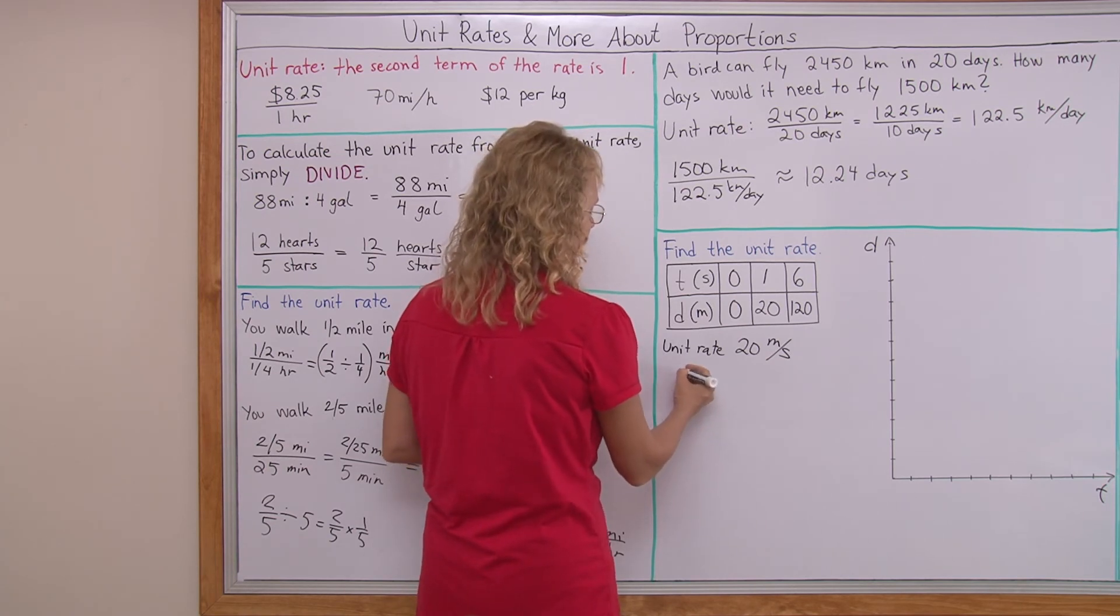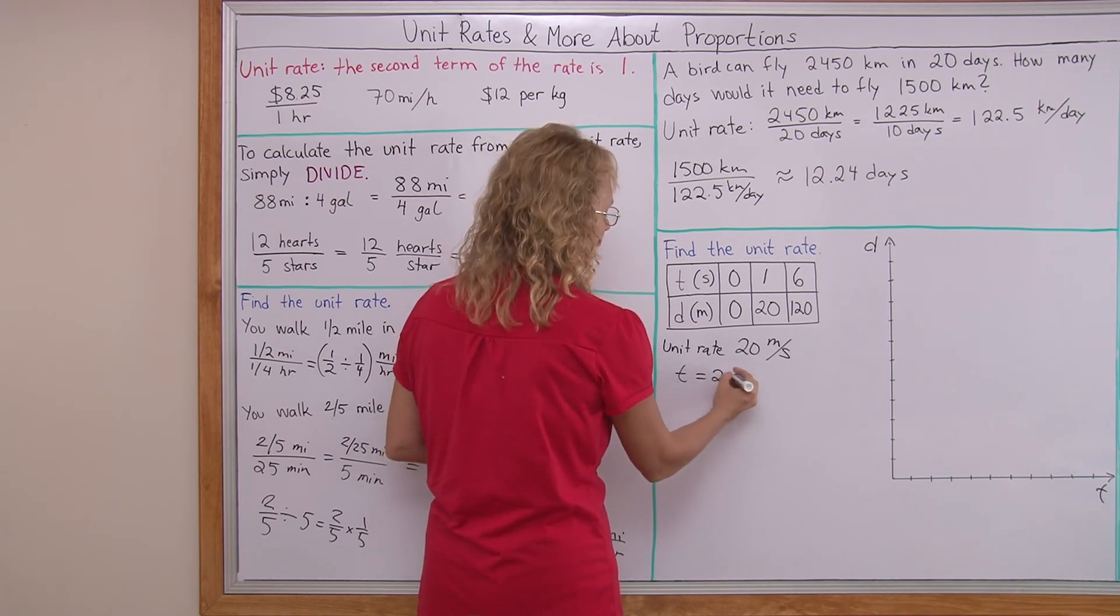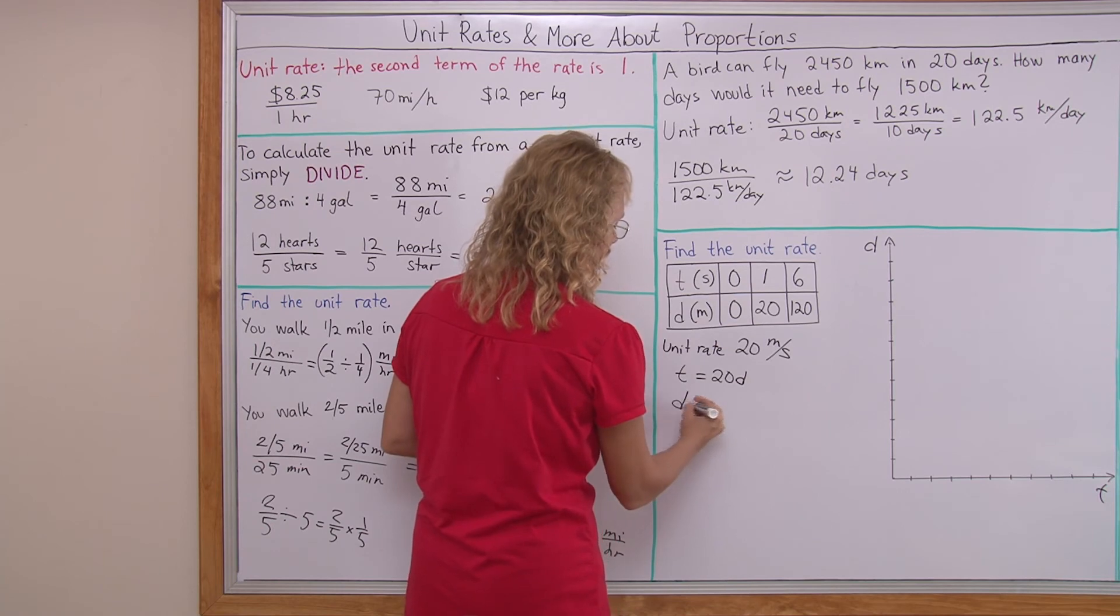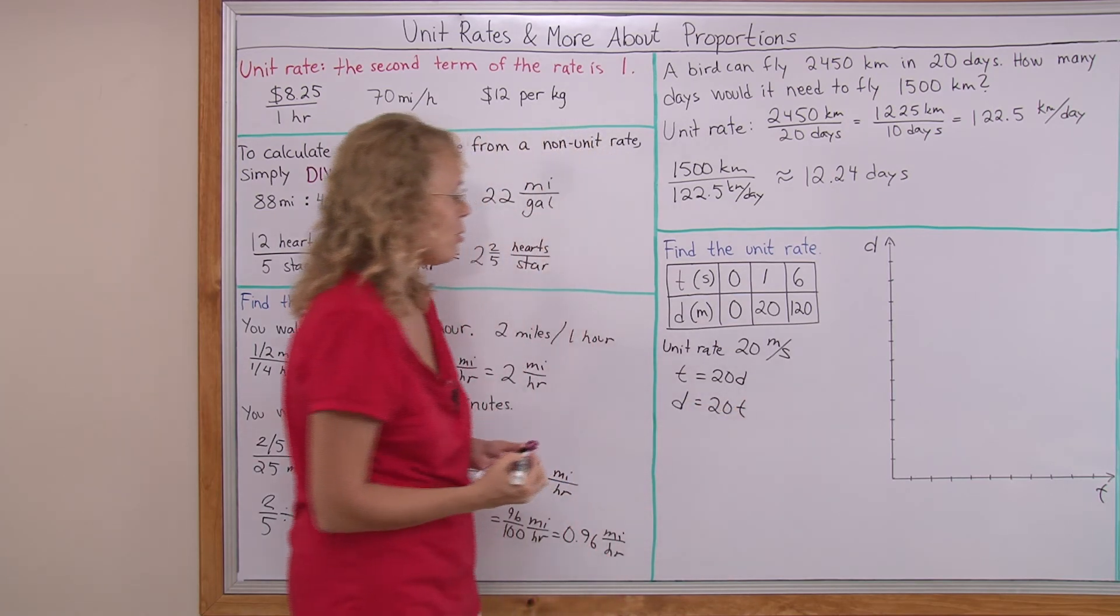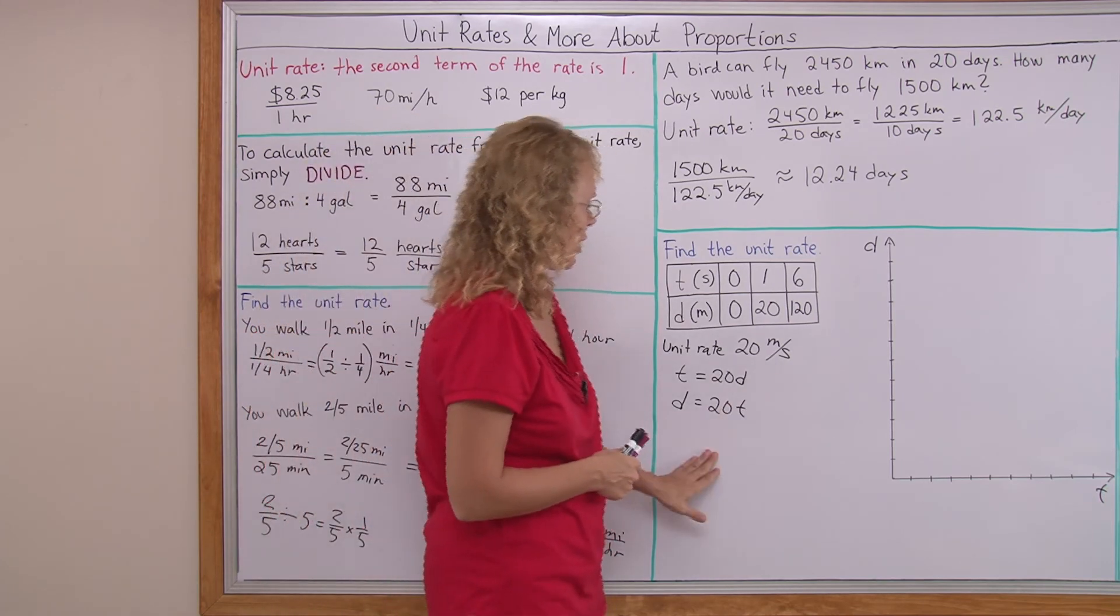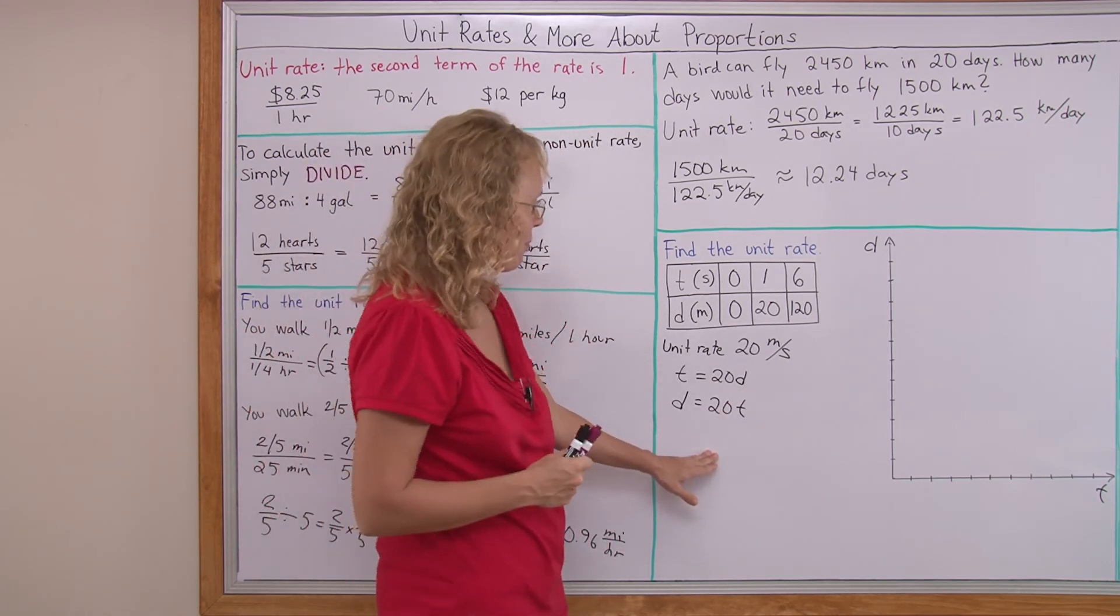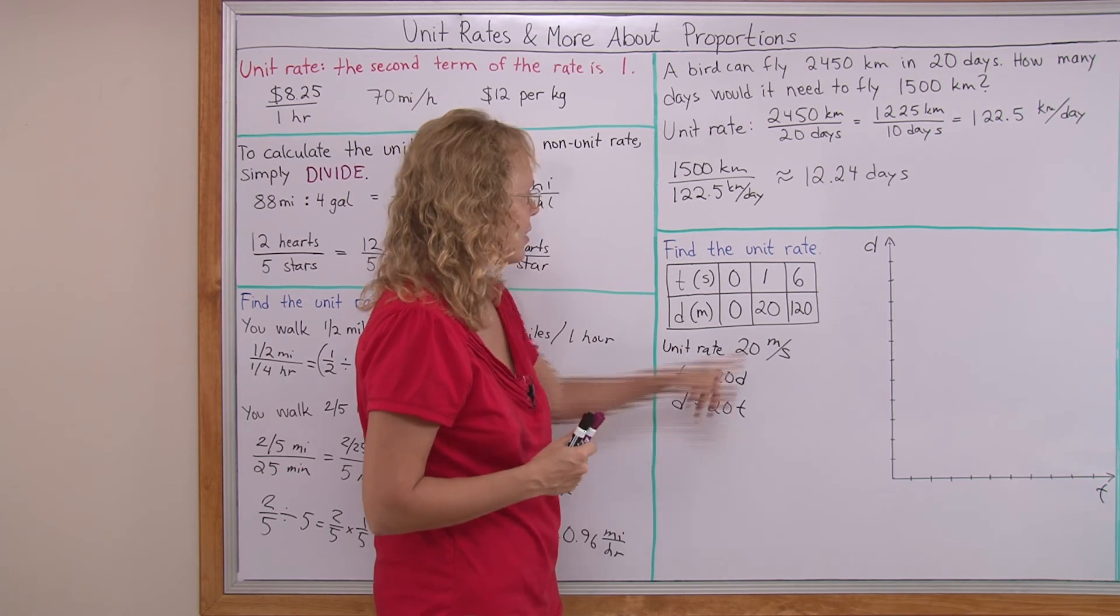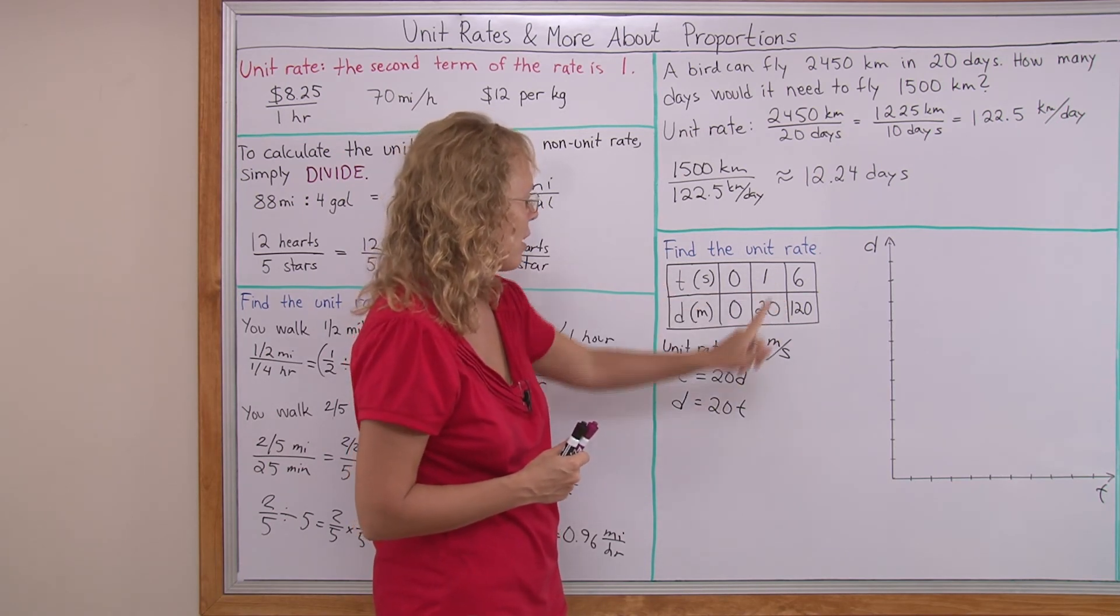You might consider it's either going to be t equals 20 d or d equals 20 t. If you don't remember how to do it, you can write both of those and think about it. Which one would it be? Which one is the correct equation? Just check that it matches with your table.